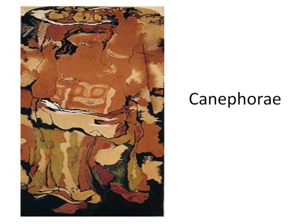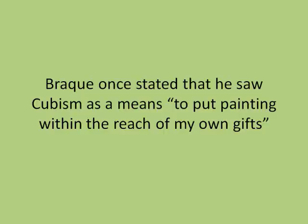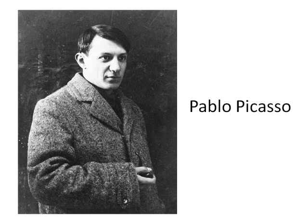Braque then moved into a classical phase in the 1920s, where he painted a series of paintings of Greek-inspired female figures bearing flowers and fruits. A special room was devoted to Braque's work in the Salon d'Automne of 1922 in honor of his 40th birthday. In the 1930s, Braque's reputation had become international. His first large-scale retrospective was staged at the Kunsthalle in 1933. In 1948, he exhibited at the Venice Biennale where he was awarded the first prize for painting. Braque once stated that he saw Cubism as a means to put painting within the reach of his own gifts.